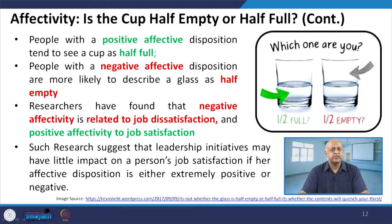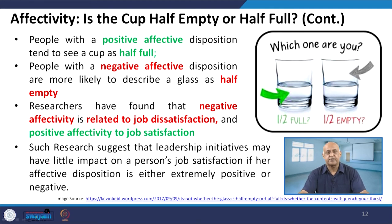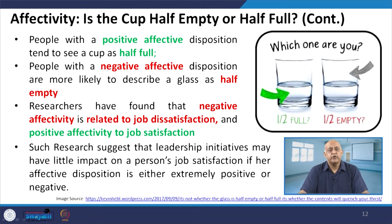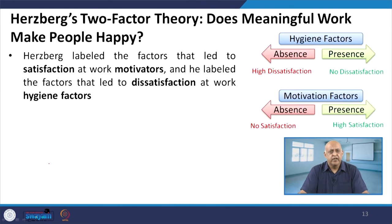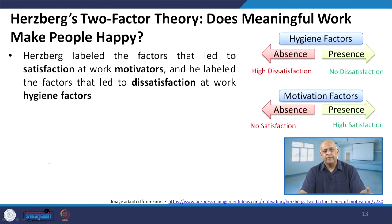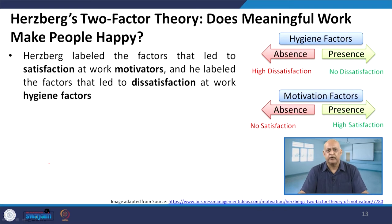By adopting leadership styles and theories for building team effectiveness, we will have job satisfaction. Research suggests that leadership initiatives may have little impact on a person's job satisfaction if her affective disposition is either extremely positive or negative. Leader will be influential only up to a certain extent, because if the original approach of that particular follower is a negative approach, the leader will not be able to influence much more as far as the affectivity theory is concerned.